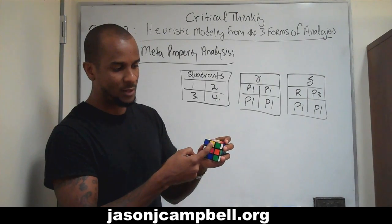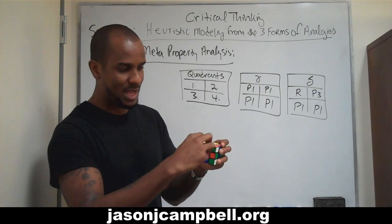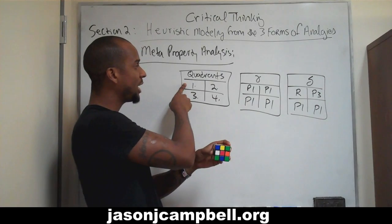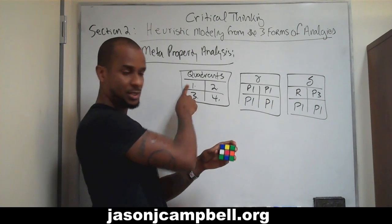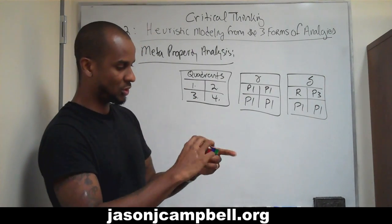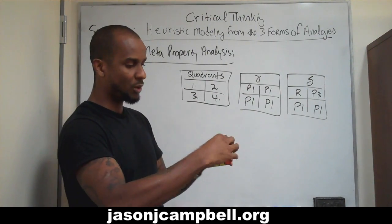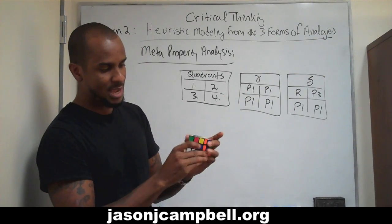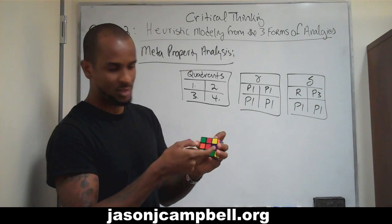Yellow here and red here, but this piece will still be in the same place, so I can put P1 here or P2 here. Not solving the cube, but as you can see, I flipped it. Now red is here and yellow is here.